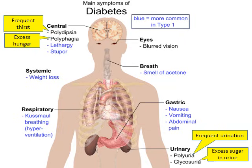Glycosuria is excess sugar in the urine. As just described, the kidneys will remove extra amounts of glucose, and that glucose is urinated out — therefore a person can test their urine for sugar.